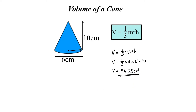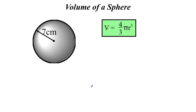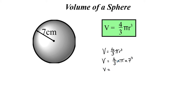The last basic shape is the volume of a sphere — a three-dimensional shape like a football. The formula is four-thirds pi r cubed. So V equals four-thirds times pi times the radius, which is 7 — just be careful if you're given the diameter, remember to halve it. Typing in four divided by three times pi times 7 cubed gives you 1436.76 cm cubed. Those are your basic shapes; now we'll look at prisms and composite shapes.